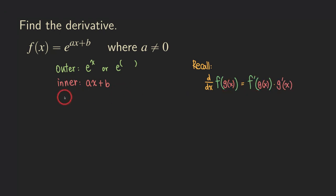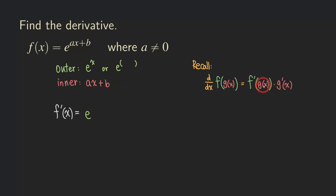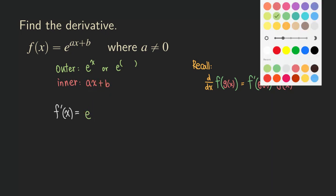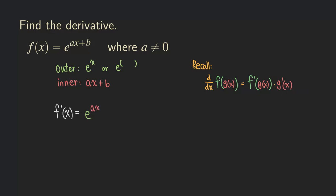So now we apply the chain rule to differentiate this. We are finding f prime of x. First, take the derivative of the outer function: the derivative of e to the x is simply e to the x. But instead of putting x in the exponent, I need to plug in the inner function, so I put in ax plus b.